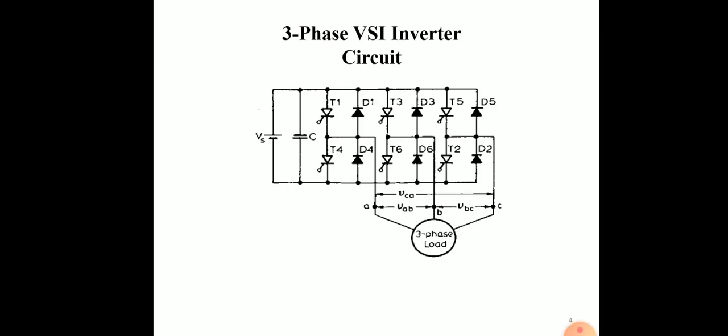Thyristors T1, T3, T5 come in the positive group. Thyristors T4, T6 and T2 come in the negative group. Firing interval between the positive group is 120 degrees and firing interval between the negative group is also 120 degrees. Firing interval between same-leg thyristors — like T1 and T4 — is 180 degrees. T3 and T6 is the same, 180 degrees, and T5 and T2 is the same, 180 degrees.